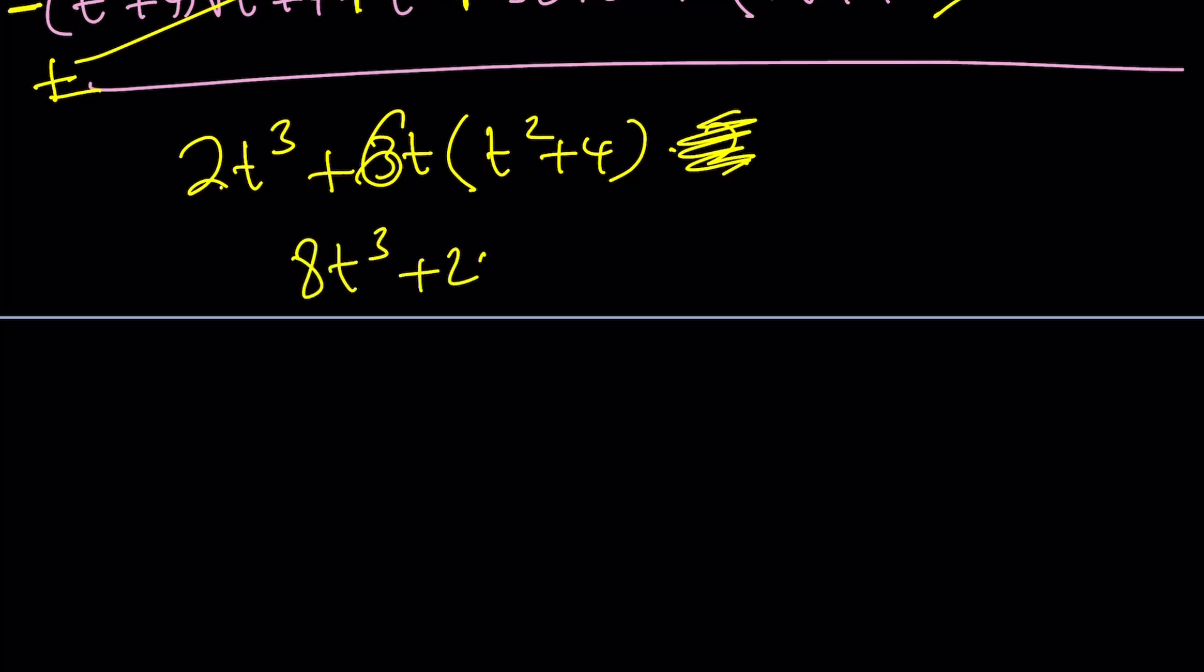8t cubed. And then, this is going to be 24t divided by 8. This should be t cubed plus 3t. Hmm. Interesting. I was expecting something a little different, but let's go ahead and take a look at the second method and see what that gives us. Hopefully, that'll shed some light.